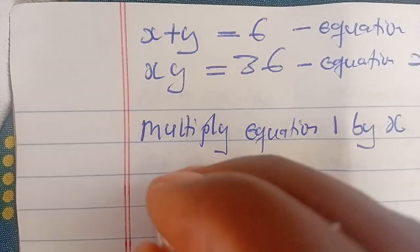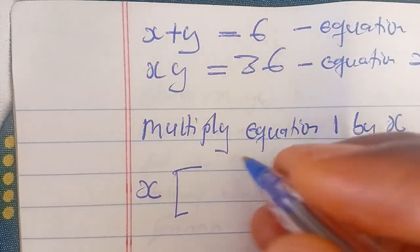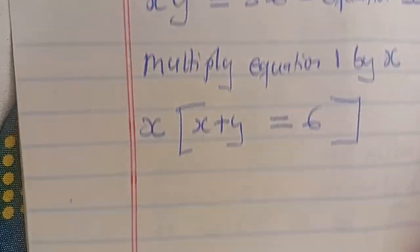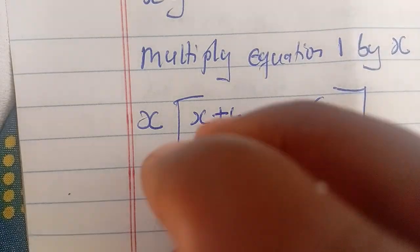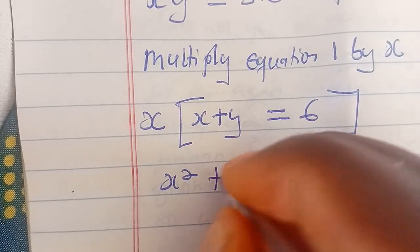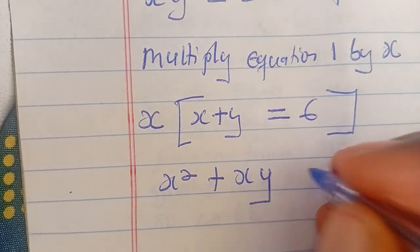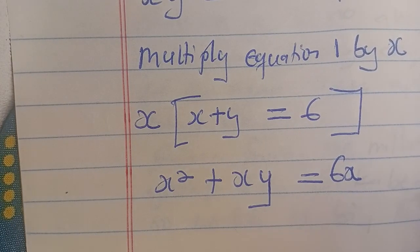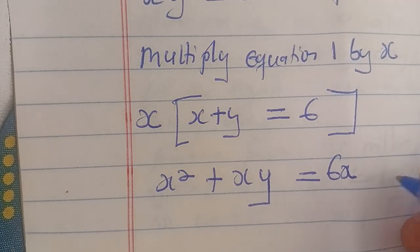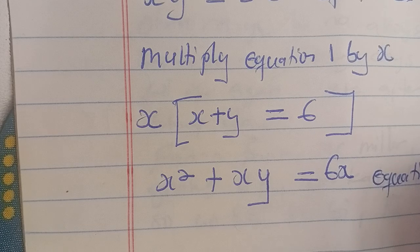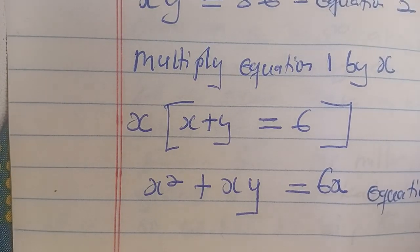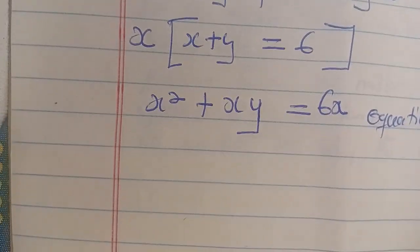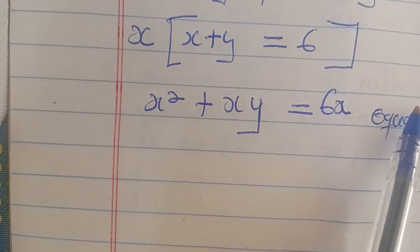So we are going to have x multiplying x plus y is equal to 6, which gives us x squared plus xy is equal to 6x. Can you see that? Let's call this equation 3.